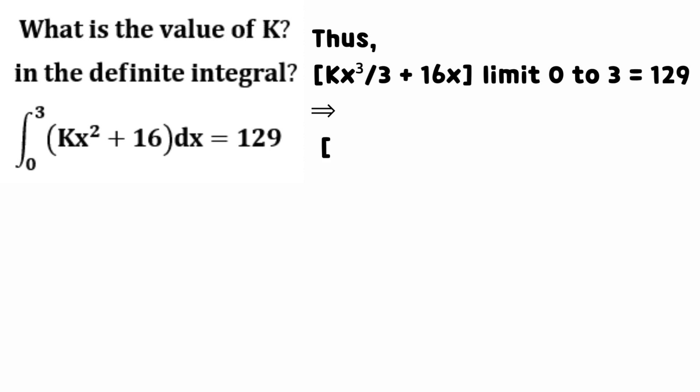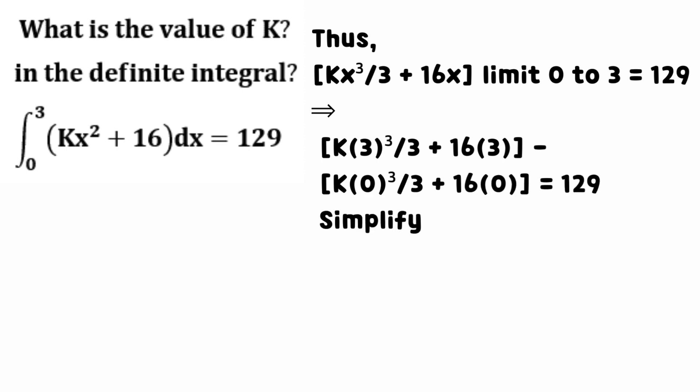Thus, the sum of k times the cube of x all divided by 3 and 16 times x for limit 0 to 3 equate to 129. Substitute values and equate to 129.